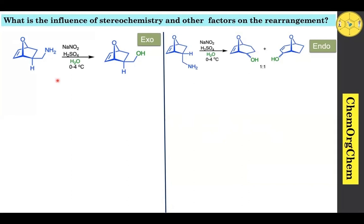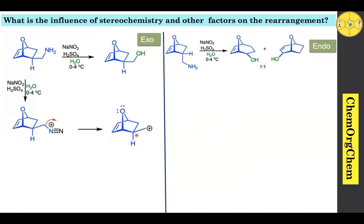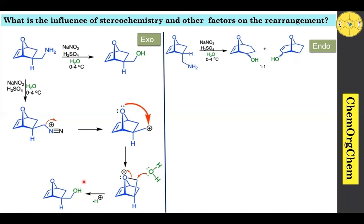Let's break down the mechanism for the exo case. When treated with sodium nitrite and sulfuric acid, you quickly get the corresponding diazonium ion, which loses nitrogen gas to give the corresponding carbocation intermediate. This carbocation is readily trapped by the oxygen, since both the oxygen and the carbocation are present at the exo face. By neighboring group participation, the oxygen's lone pair quickly attacks the carbocation center, generating an intermediate. Then a water molecule attacks the carbon, and the electrons move toward the oxygen center, giving the unrearranged alcohol as the product.